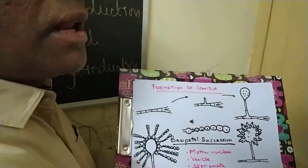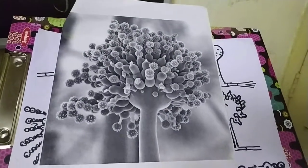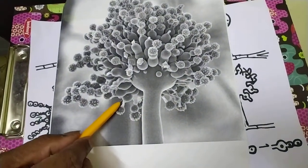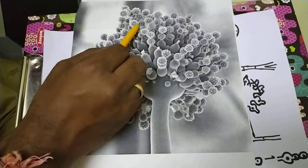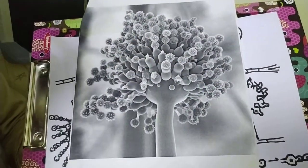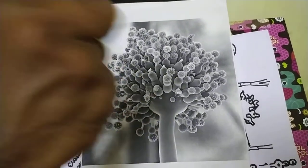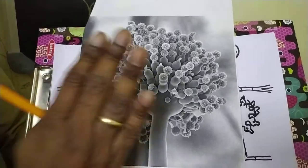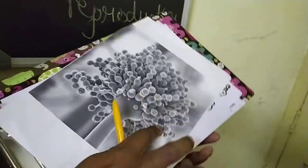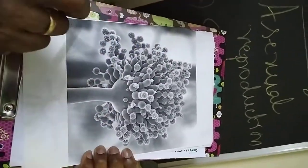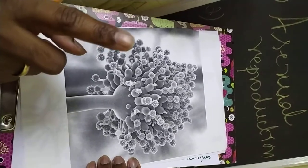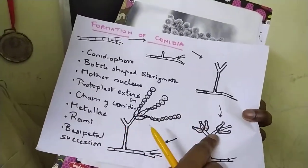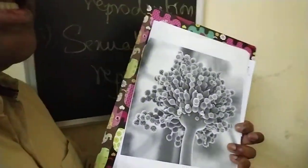Looking at Aspergillus, you can find many sterigmata over the vesicle — like pins on a rubber ball, with chains of conidia hanging like beads. Aspergillus has a unique feature of vesicle formation. Penicillium, by contrast, has a brush-like appearance — in fact, 'penicillus' means brush in Latin. So Aspergillus is vesicular in nature and Penicillium is brush-like; you must note the difference.